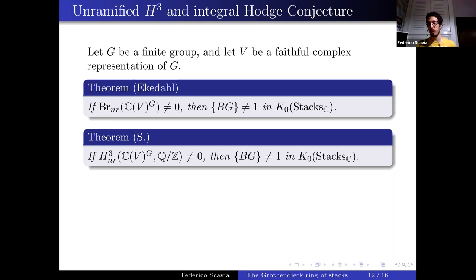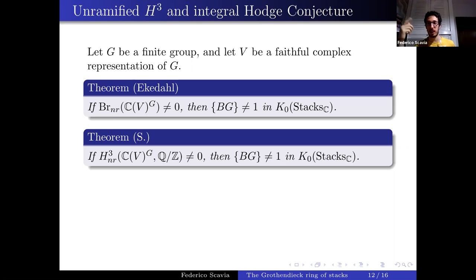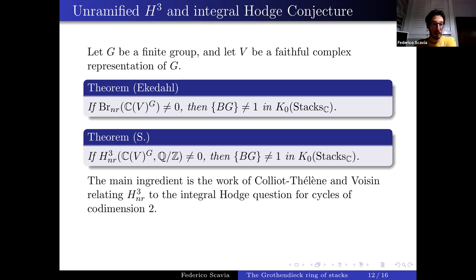The theorem is: if unramified H3 is non-zero, then the class of BG is different from 1. The Galois-theoretic definition uses residue maps going into H2 (one degree lower), taking classes killed by all residues. The main ingredient is an important theorem of Colliot-Thélène and Voisin relating unramified H3 (a birational invariant) to the integral Hodge conjecture for cycles of codimension 2.